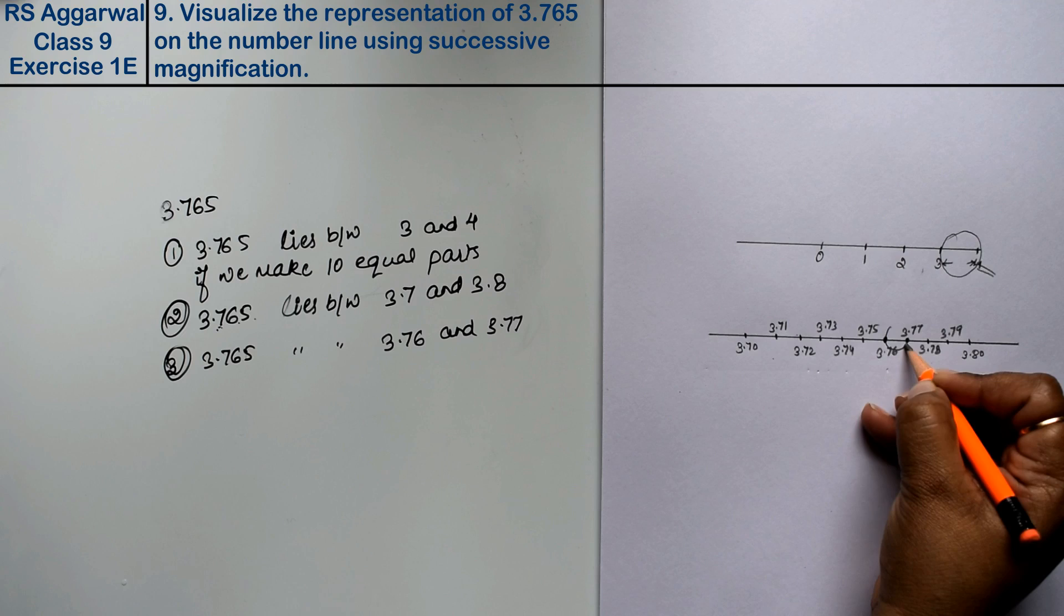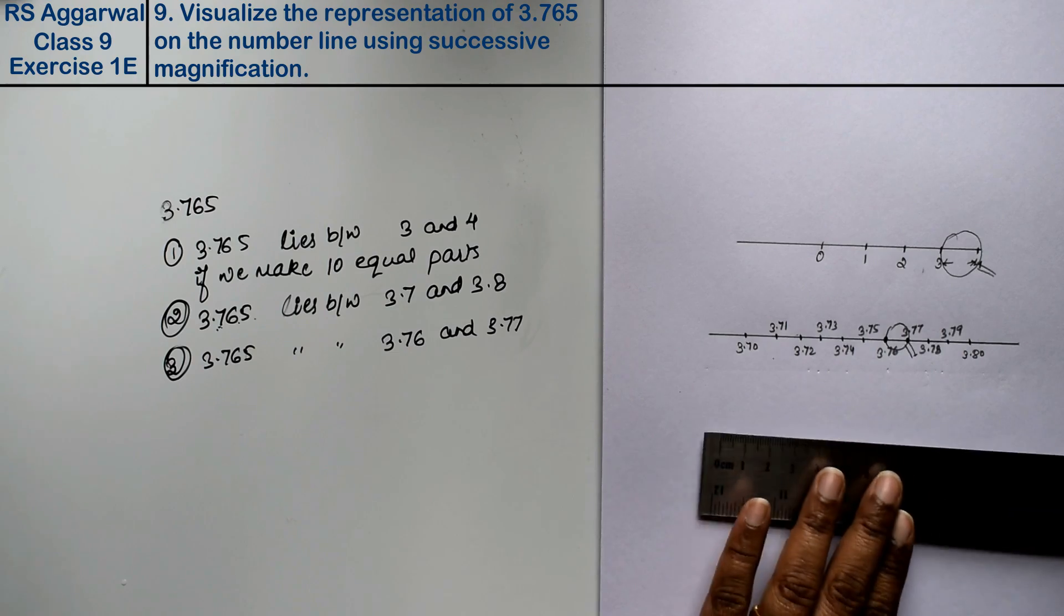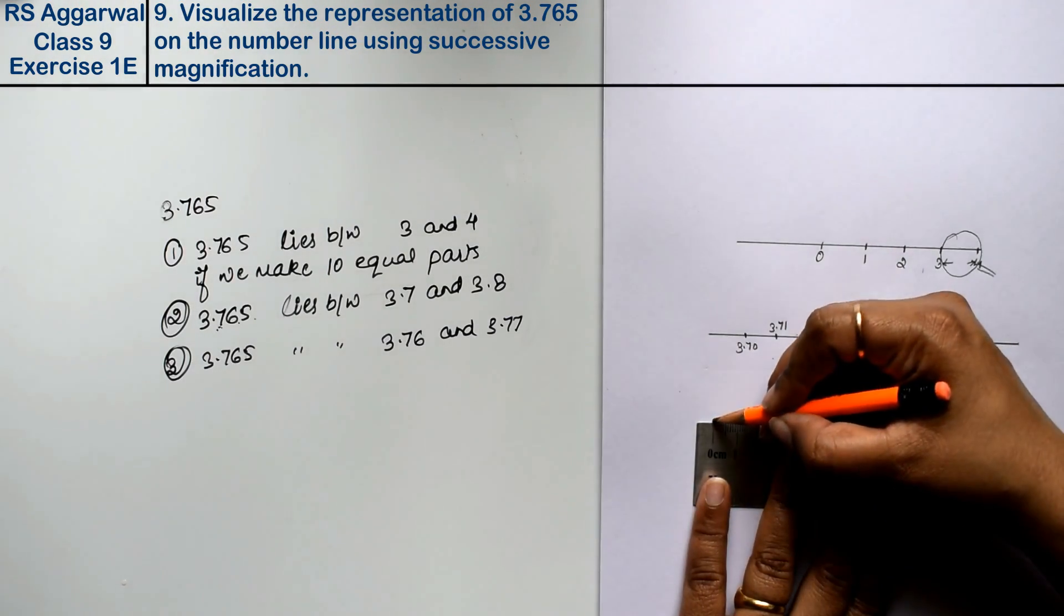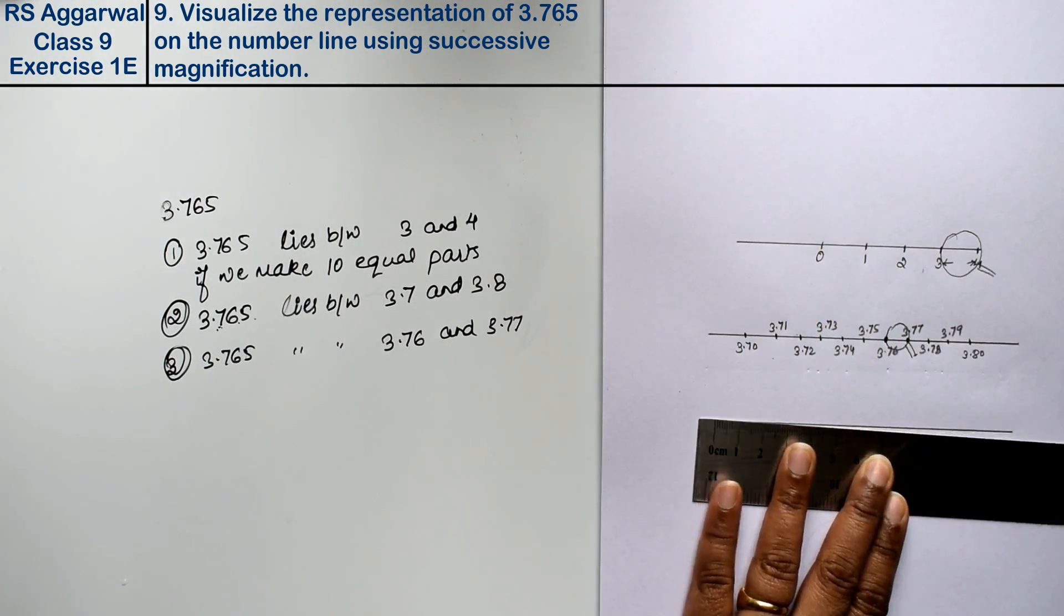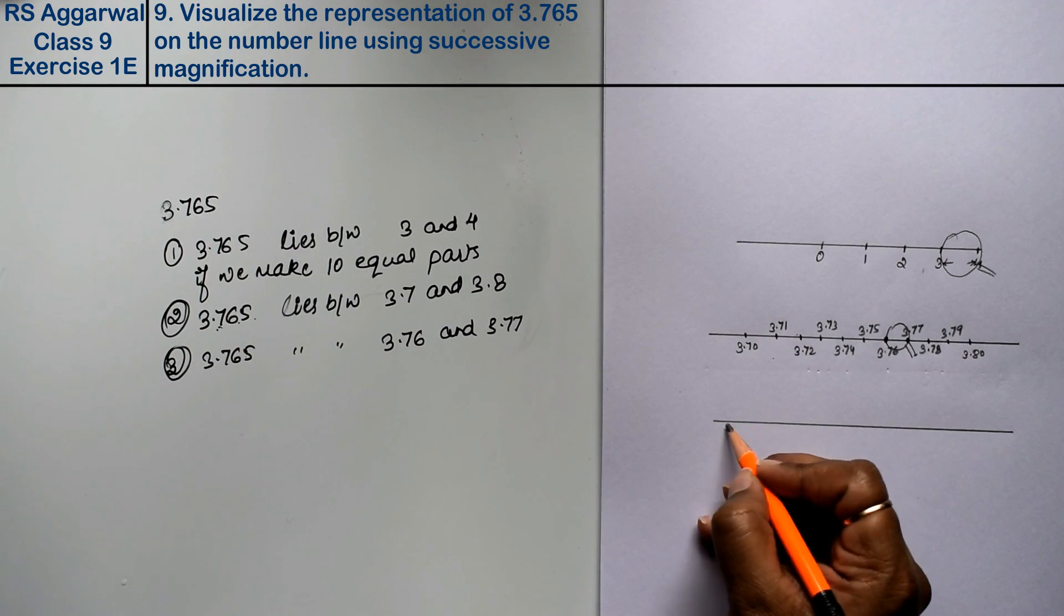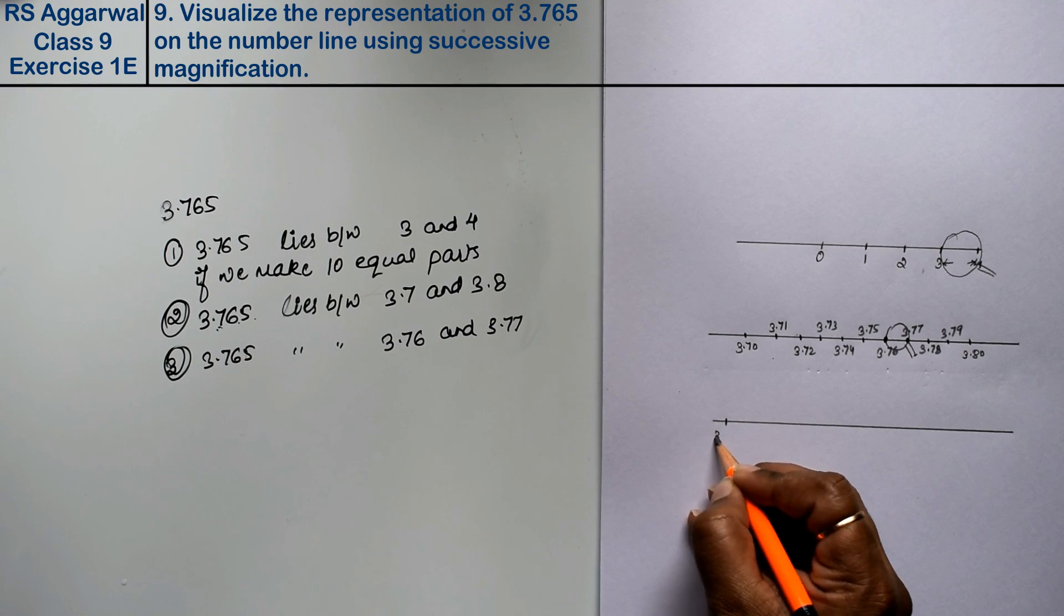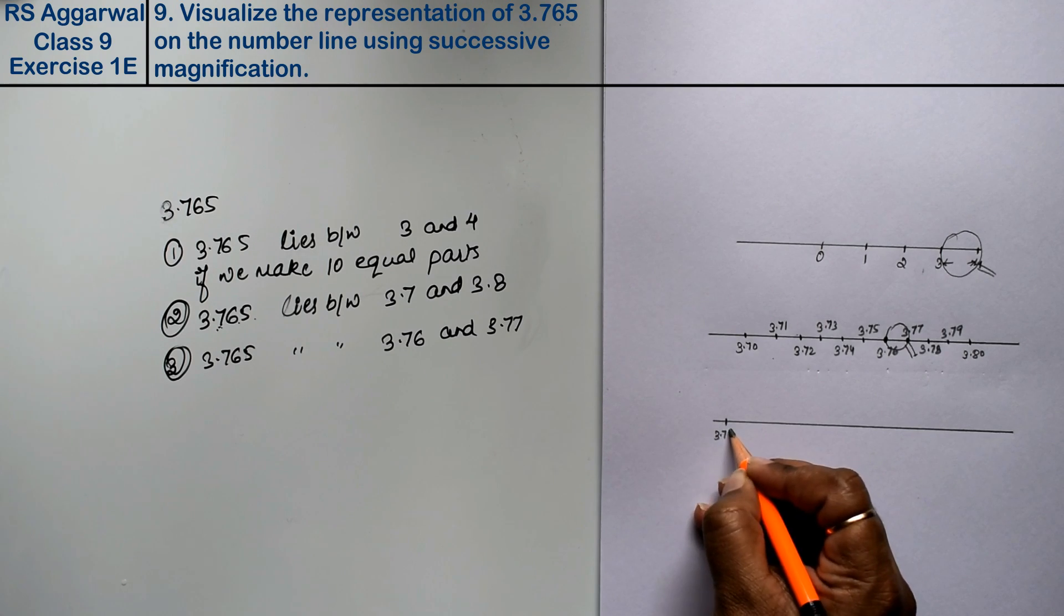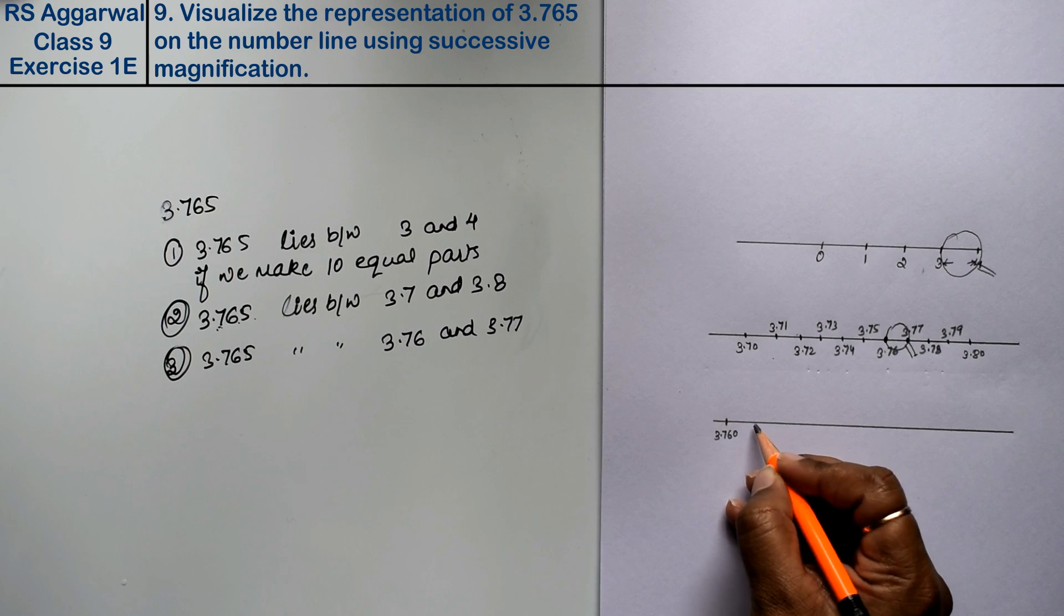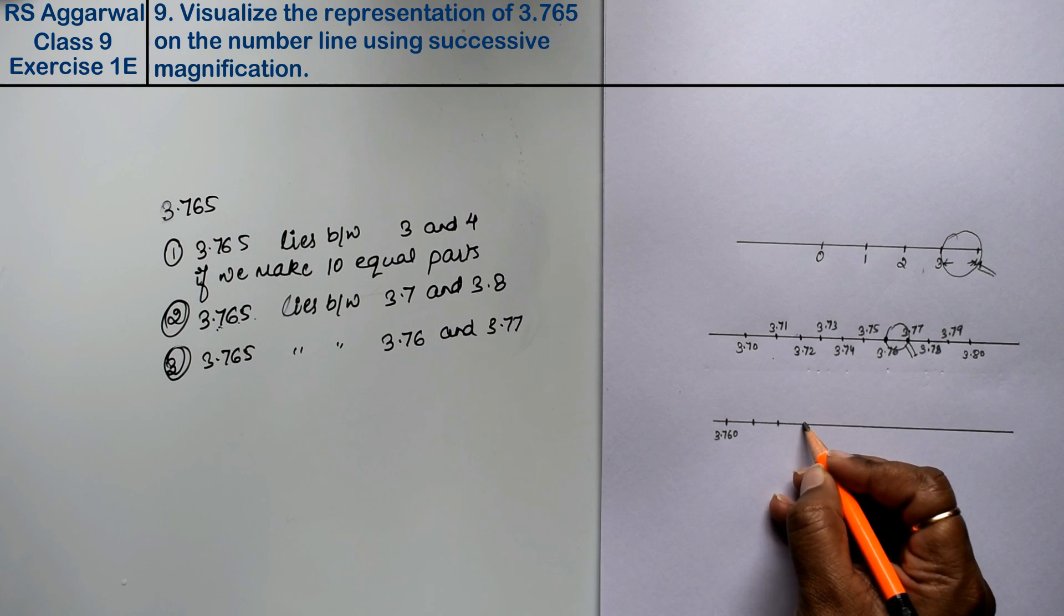Right friends, see here it will be placed. I am making a magnifying glass. Now it will become another number line which will be placed between 3.76 and 3.77. So here it will be 3.760, and 10 parts will be placed.